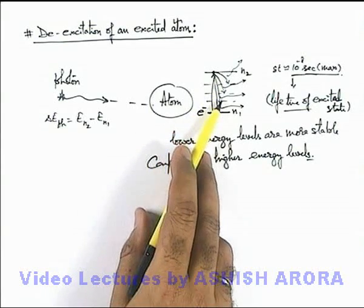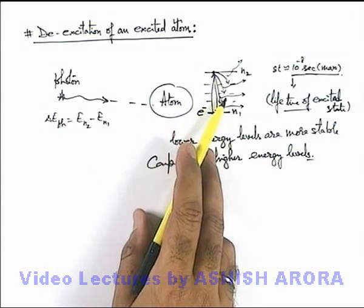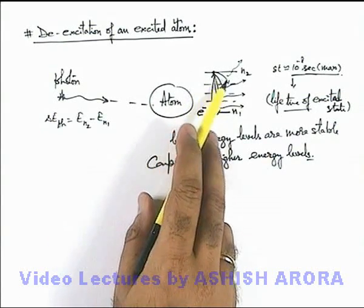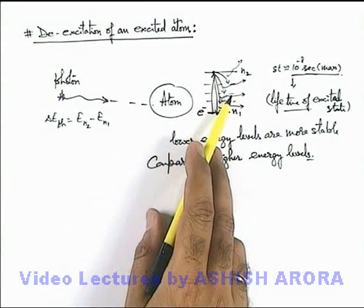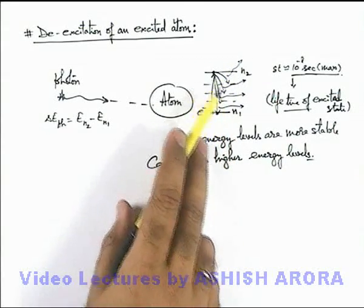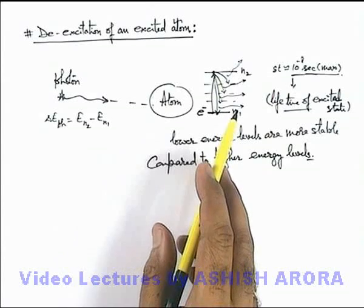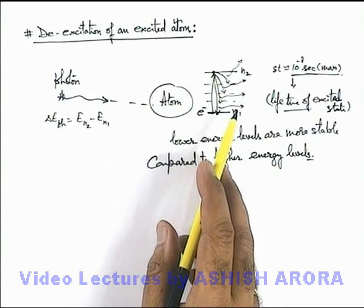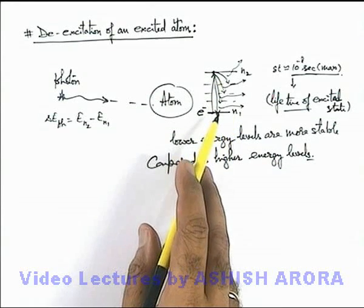Now in this process, which we call de-excitation of an atom, electron emits electromagnetic radiation photon which is equal to the energy difference of the two corresponding energy levels. This is the phenomena we call de-excitation.